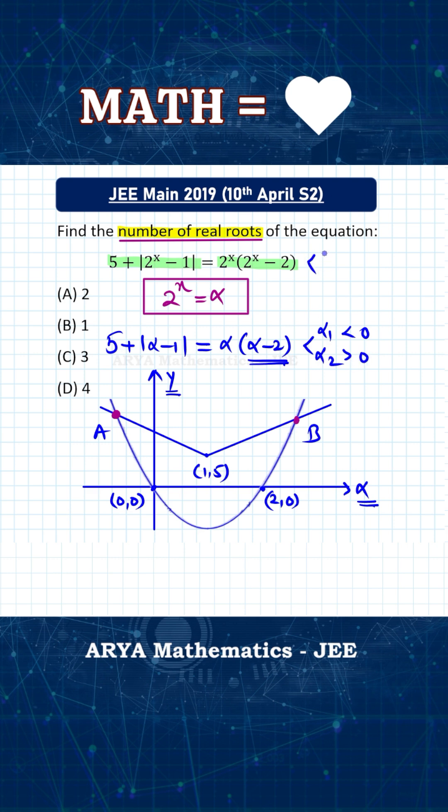Now, let us say for equation 1, the roots are x1 and x2. Now, because alpha is 2 raised to x. So therefore, 2 raised to x1, this will be alpha 1 and 2 raised to x2, this will be alpha 2.